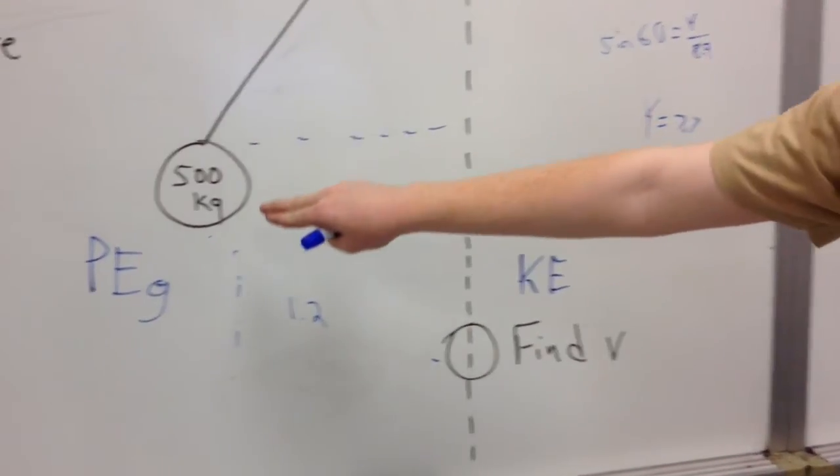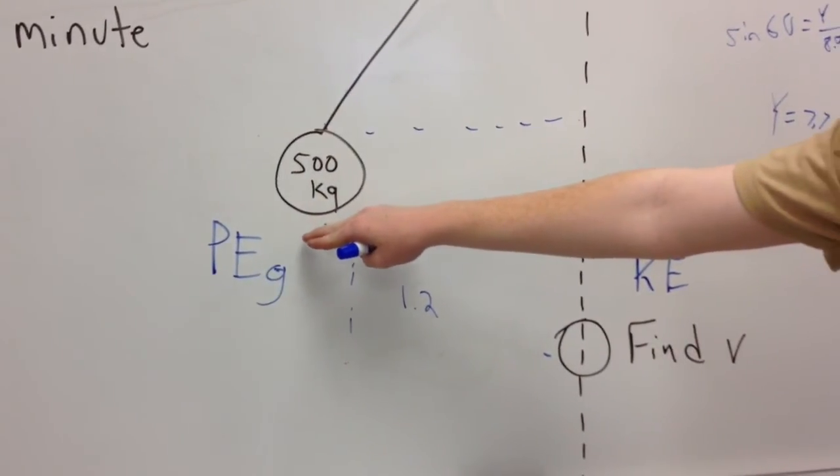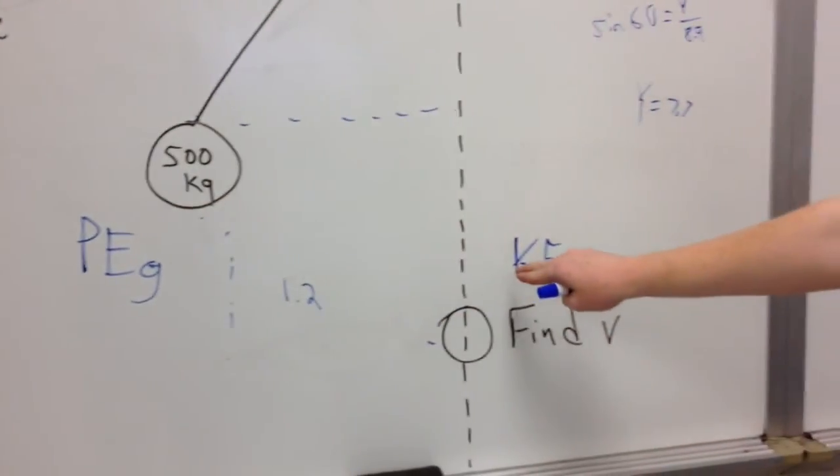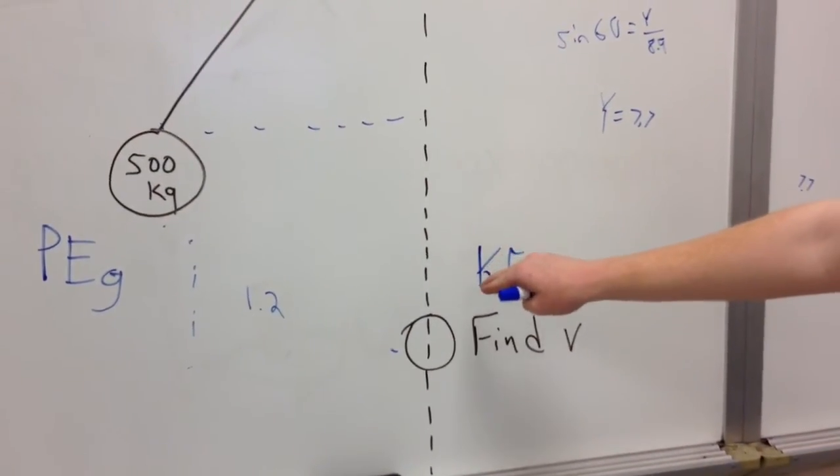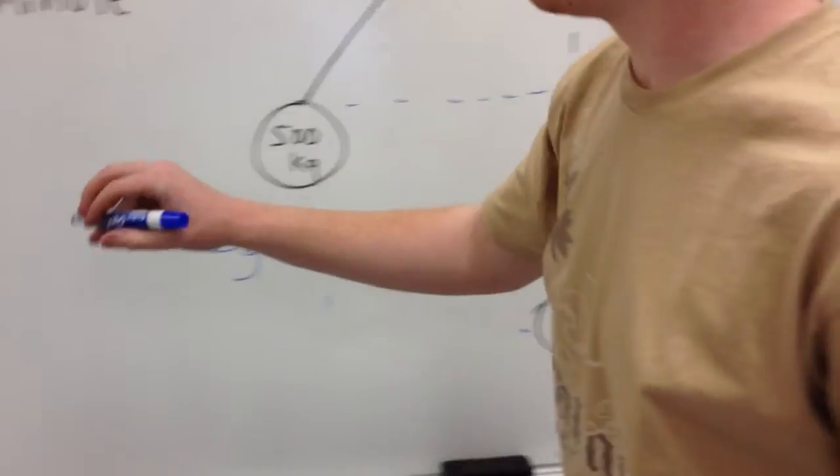So now we have potential energy due to gravity when it's at its highest point, and kinetic energy when it's at its lowest point. Since energy always remains the same, we can set the two equal to each other in these formulas.